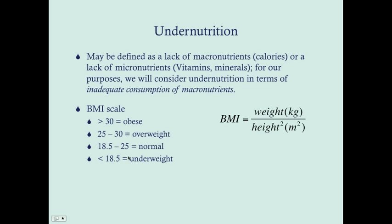A BMI of 18.5 to 25 is normal — this is where you should be. 25 to 30 is overweight, and more than 30 is obese. When we're talking about undernutrition, these people are going to fall in the underweight category, less than 18.5. BMI is calculated as your weight in kilograms divided by your height in meters squared.